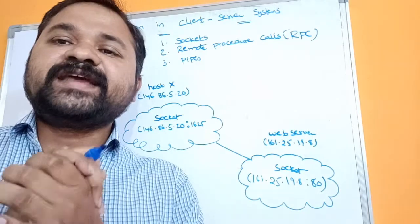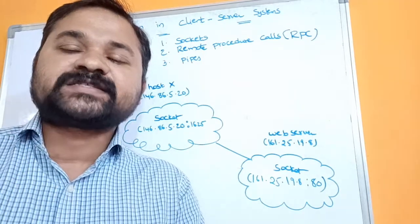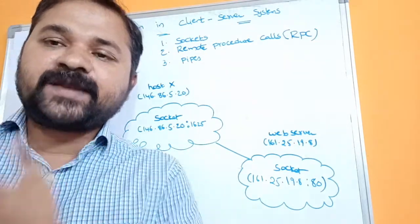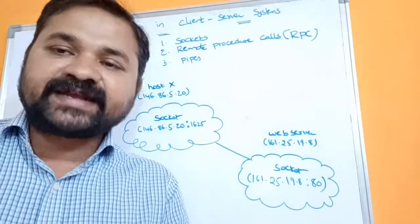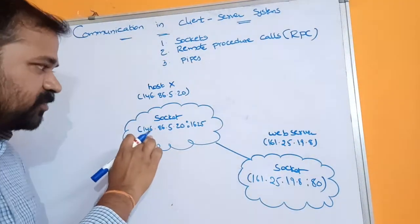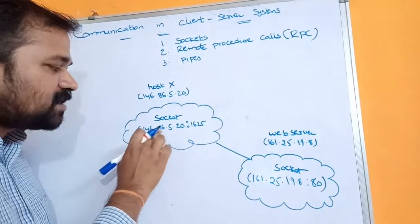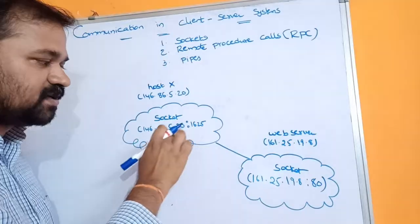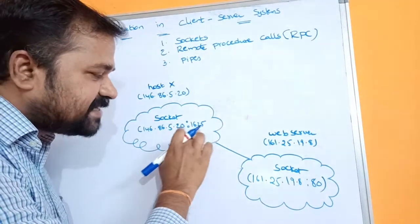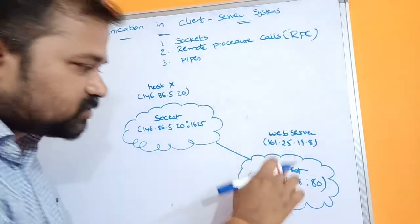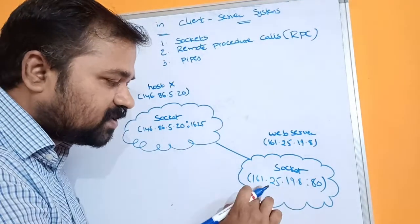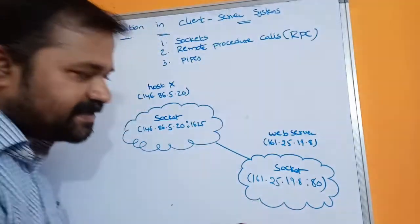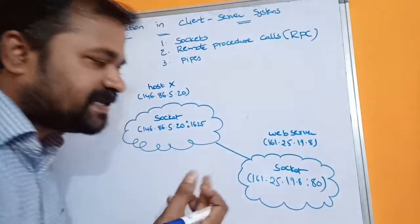A socket is a combination of IP address and port number. If we concatenate IP address and port number, we get the socket address. For example, 146.86.5.20 is the IP address and 1625 is the port number. Similarly, 161.25.19.8 is an IP address and 80 is the port number.